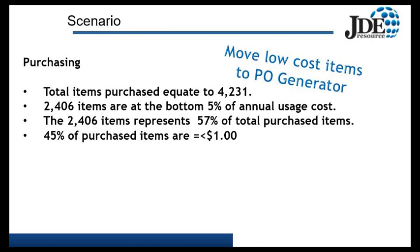But how do we do it? The Purchase Order Generator is an ideal tool to work with. Ideally, you would have an A, B, and C analysis for valuation of inventory. You can then look at your C items and identify what can be offloaded onto the Purchase Order Generator.